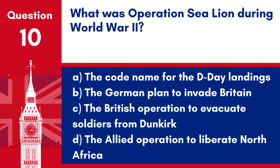Question 10. What was Operation Sea Lion during World War II? a. The codename for the D-Day landings. b. The German plan to invade Britain. c. The British operation to evacuate soldiers from Dunkirk. d. The Allied operation to liberate North Africa. Answer: b. Operation Sea Lion was the codename for Nazi Germany's plan to invade and occupy the United Kingdom during World War II.